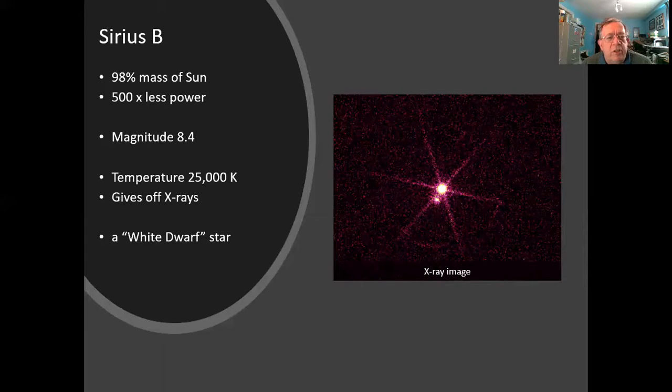It's rather curious that Sirius B is 98% of the mass of the sun, but it's actually putting out 500 times less power. And as I said, a magnitude of 8.4, fairly faint, not visible to the naked eye even if Sirius wasn't there. The faintest star that the naked eye can see is magnitude 6.